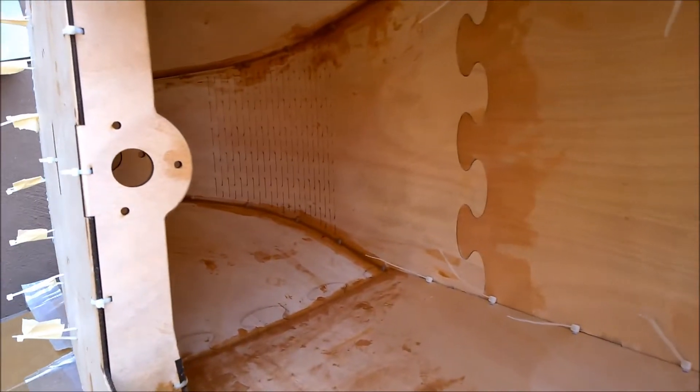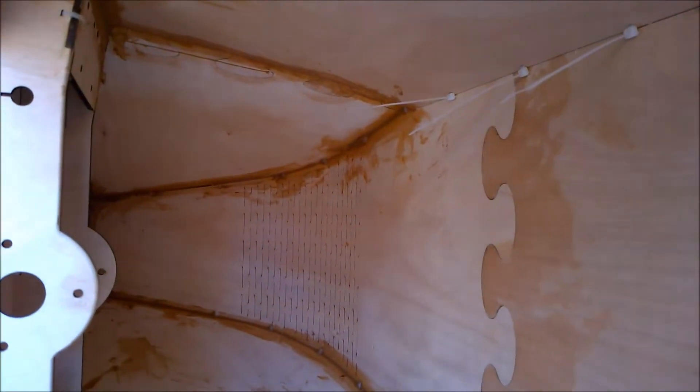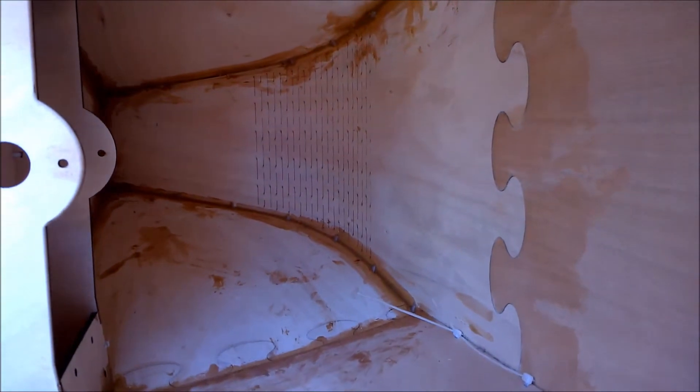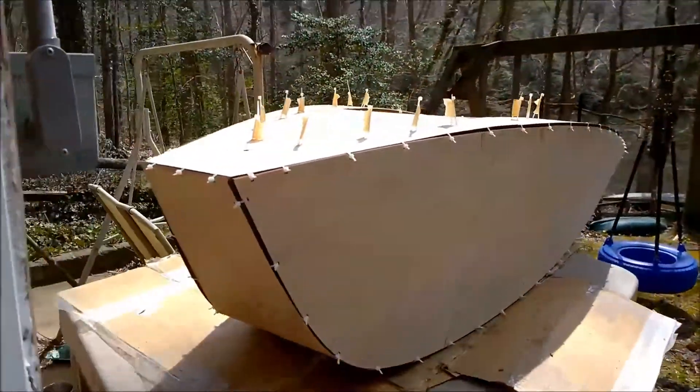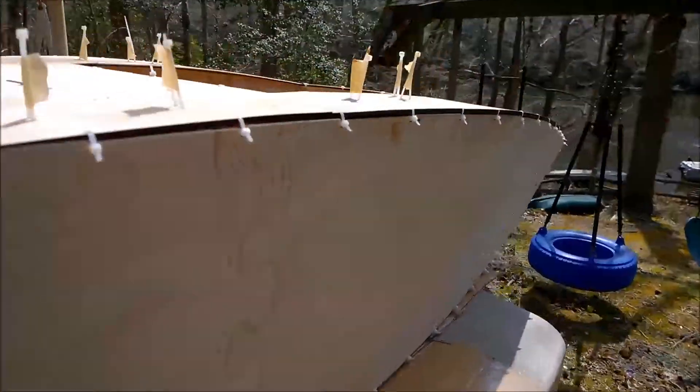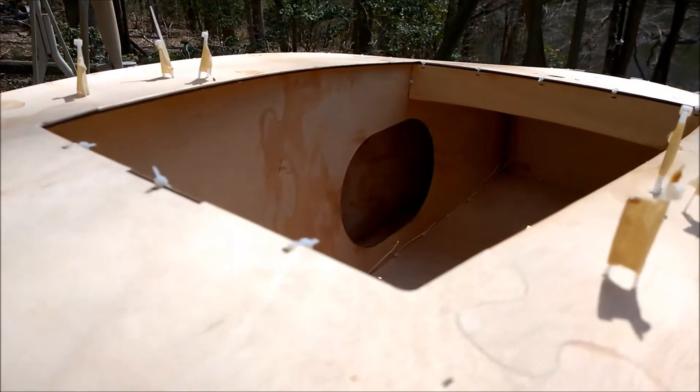And we've got the front nose part, the joints epoxied up. After that we'll move on to the transom and inside the bulkheads. The inside seams have all been epoxied with the wood flour. Everything's nice and tight. The bulkheads have been done and the transom has been done.